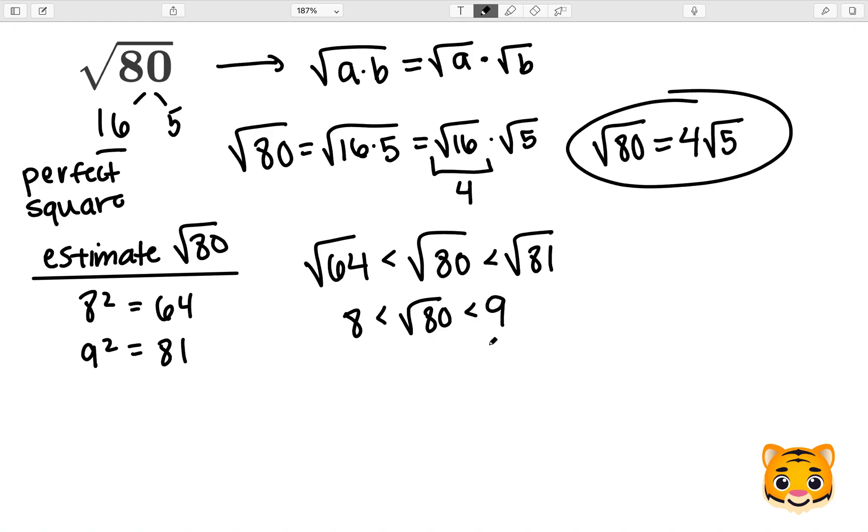Therefore, the square root of 80 lies between 8 and 9. To find the value that the square root of 80 is closest to, we will look at the difference between 80 and our perfect squares. To do this, we will subtract 80 and our perfect squares.